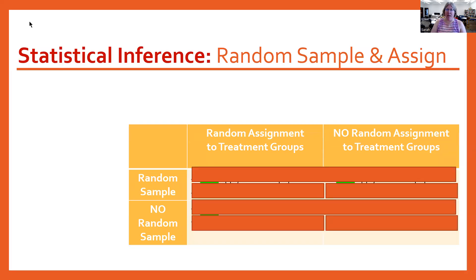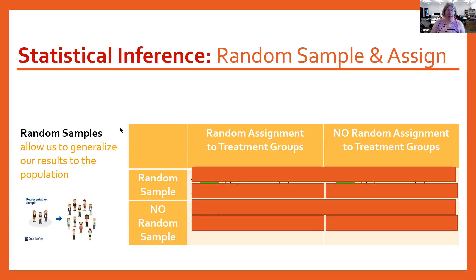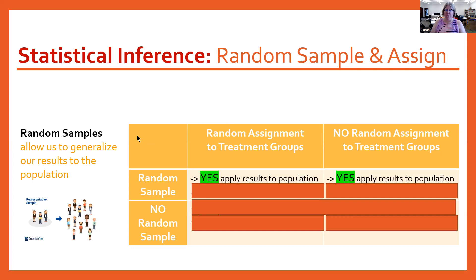We keep talking about random samples and random assignment, so I want to formalize this part of statistical inference. We've talked a lot in the last chapter about a random sample. The benefit of a random sample is it allows us to generalize our results to our population. If we have a random sample, that's all we need to check to say yes, I can apply my results to the population.